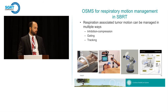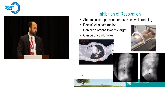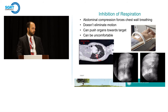Shifting to respiratory management: tumors move with respiration and this needs to be accounted for and managed. Several techniques exist, from crude methods like inhibition to more advanced techniques like gating and tracking. Inhibition of respiration — the most widely used example being abdominal compression — forces chest wall breathing. It's very effective at reducing motion as quantified on x-ray and 4D CT data with a lot of supporting papers, but it doesn't eliminate motion.